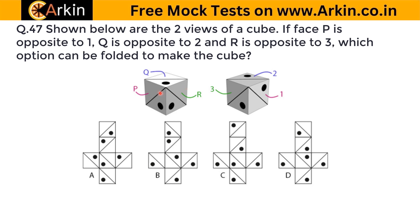We know that every cube has eight corners. These are the four corners and these are the remaining four corners. These three faces are shown in this view and the remaining three faces are here. So these four and these four are different corners.